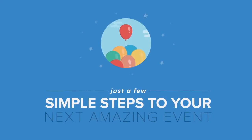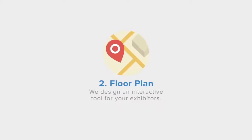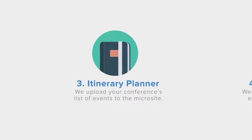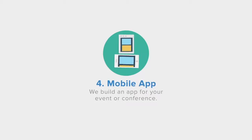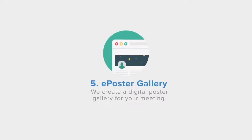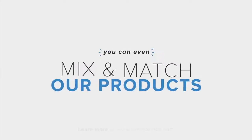The EventScribe system can include any of the following products: a conference website, an interactive floor plan, an online planner, a native app for Android and iOS devices, and an e-poster gallery with images of the presented posters. And because the whole system is linked together, your attendees always have the information they want no matter where they look.